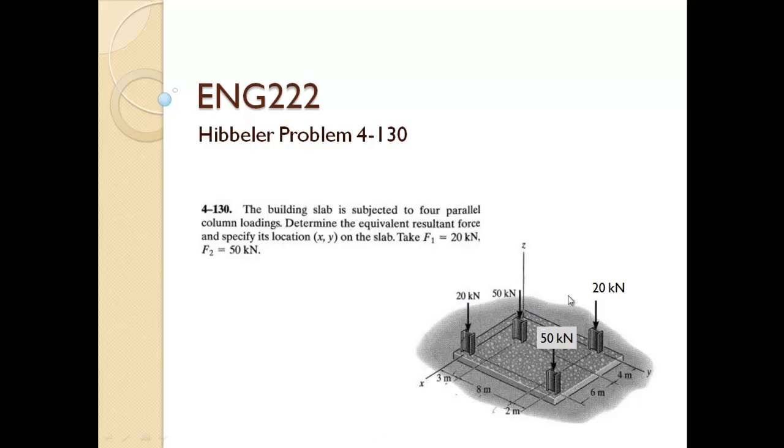We have a system of forces, four forces all directed in the negative z direction. What we want to do is figure out if we took away these four forces, where could we put a resultant force that would produce the same rotation about the x-axis and the same rotation about the y-axis.